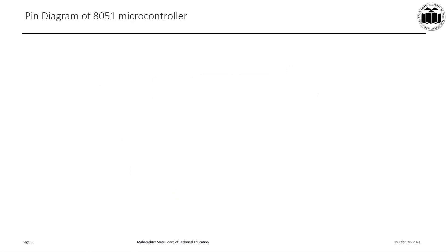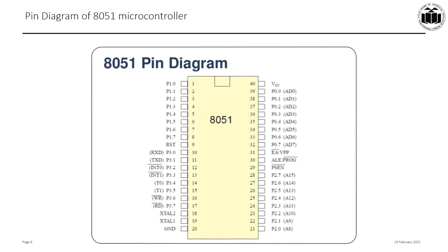The 8051 is a 40-pin DIP IC. The pin orientation may change with the package but the pin configuration remains the same. This is a detailed diagram of the 8051 40-pin DIP IC — it is a dual inline package and each side contains 20 pins.